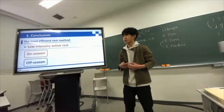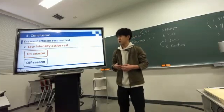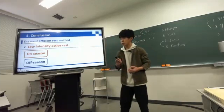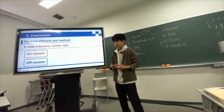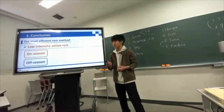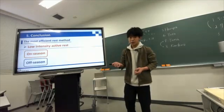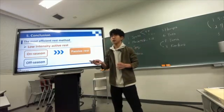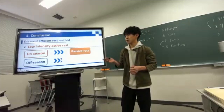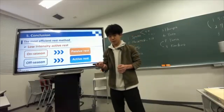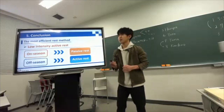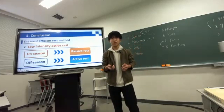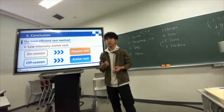Finally, let me summarize the points of this research. The objective of this research was to clarify how to use active rest and passive rest to recover from fatigue most efficiently. From the research, I found that low-intensity active rest is the most efficient, and dividing by the seasons, it is better to take more passive rest in the on-season and active rest in the off-season. I conclude that the most efficient rest method is low-intensity active rest, and the priority of the two types of rest methods changes depending on the season.